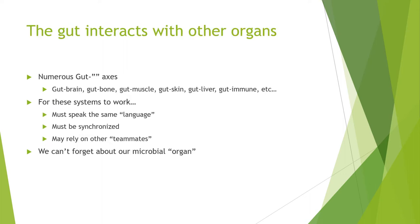The gut interacts with other organs. If you've been following the research, you've probably come across the numerous gut axes — the gut-brain axis, the gut-bone axis, the gut-muscle axis, the gut-skin axis, the gut-liver axis, the gut-immune axis, et cetera. There are a number of axes discussed in the literature, and for these systems to work, a few criteria must be fulfilled.